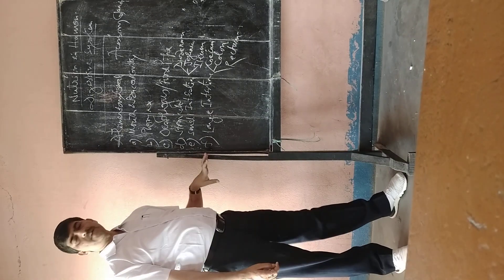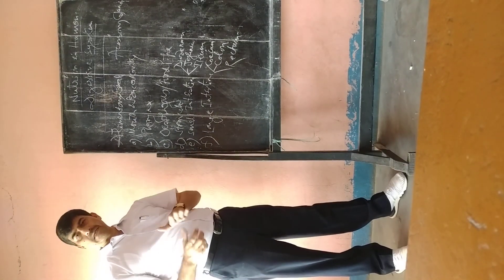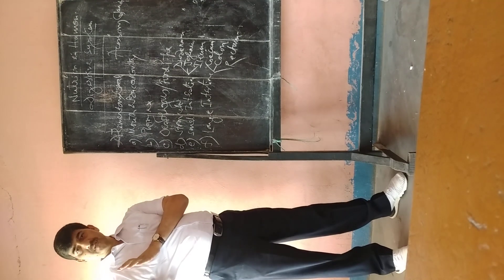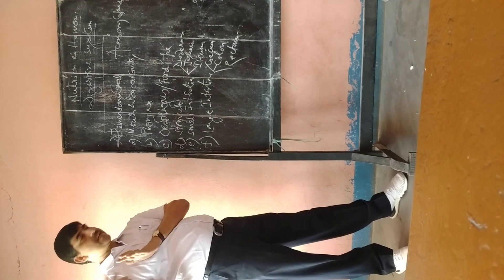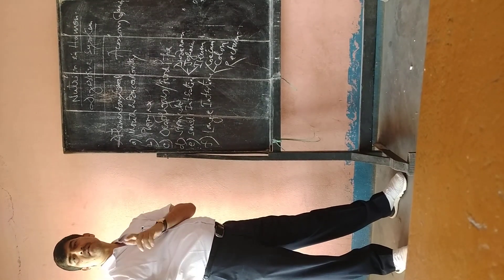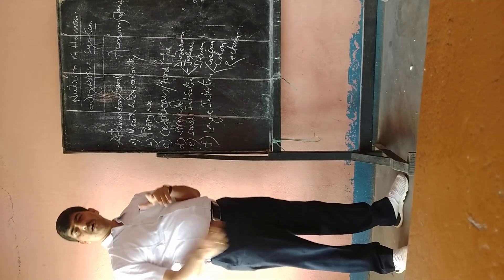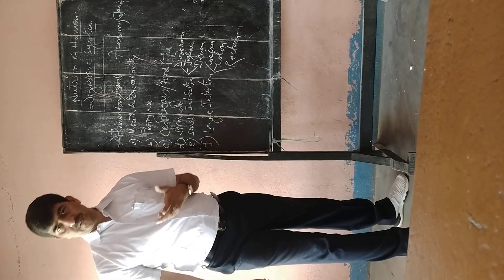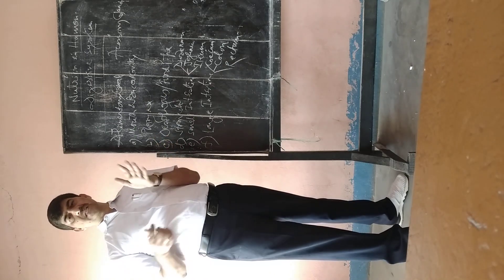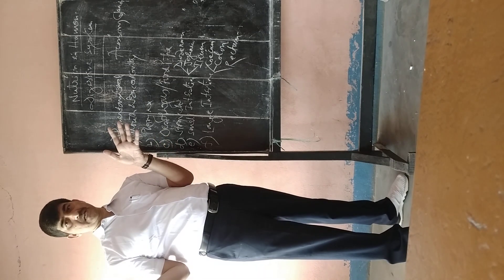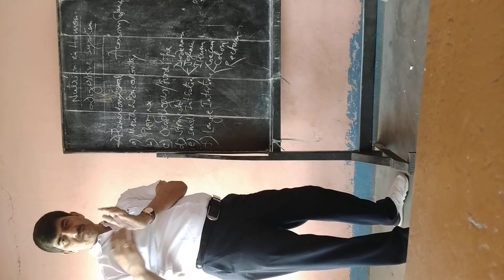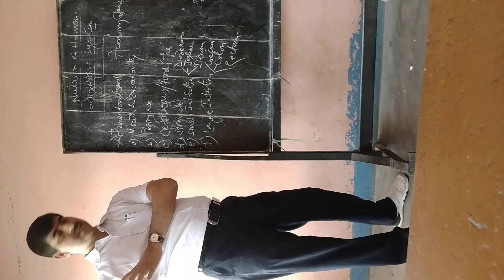The length of the alimentary canal is directly related to the nature of the food of an animal. Herbivorous animals have a larger length of intestine in comparison to carnivorous animals, because herbivorous animals need more surface area to digest the large amount of food they consume.